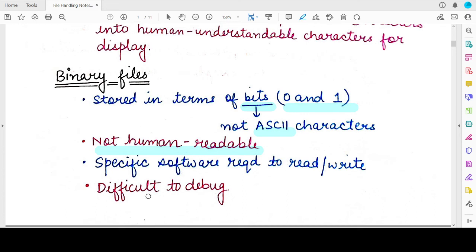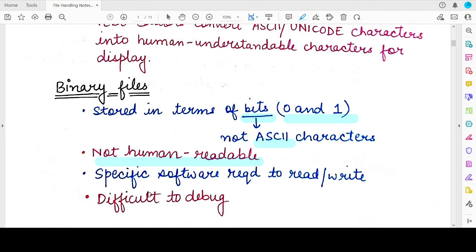And that is why we say that they are not human readable or human understandable. And they are very difficult to debug because the user, the programmer or the person who has written the binary file needs to know what they actually represent, what the bits represent and not everyone can debug it, find errors in it or correct it.